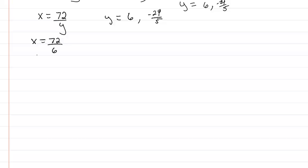So we have x is equal to 72 divided by 6. We can easily throw that in our calculator. And of course we're going to get 12. So what we have here is we have these as pairs.